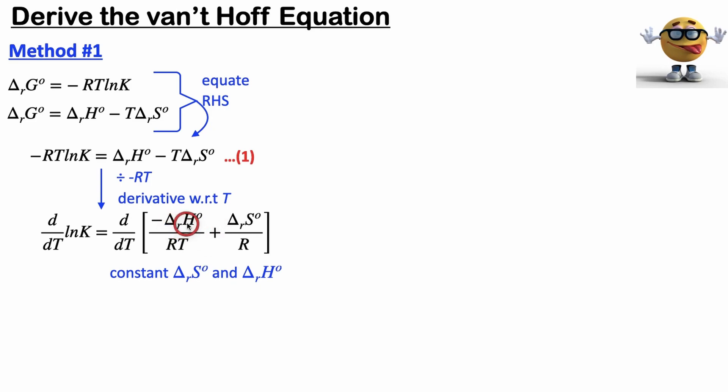They are temperature dependent, so they do change with temperature. But over small temperature ranges, we can sometimes assume that they're constant. And this is one of the requirements of the Van't Hoff equation. So if we do that, this derivative will leave it as is. This becomes the derivative of 1 over T, which is negative 1 over T squared. And then this is the derivative of a constant, which is 0. So this whole thing becomes the differential form of the Van't Hoff equation.